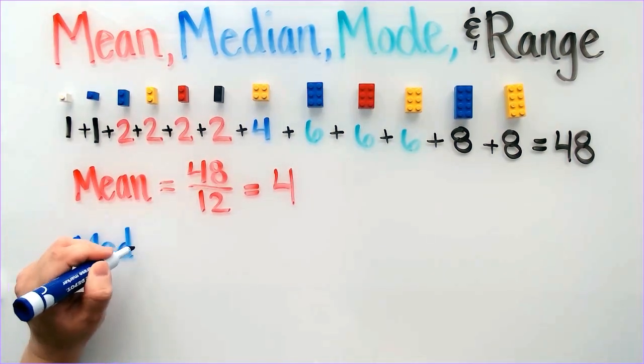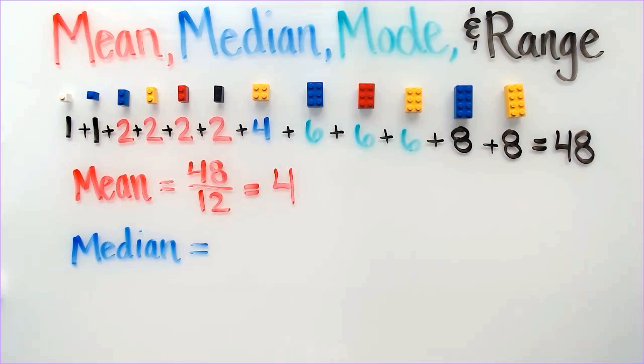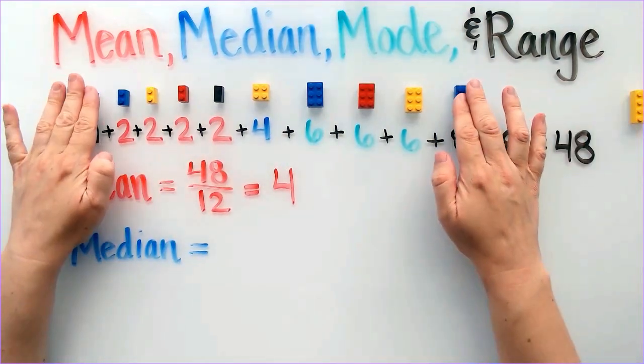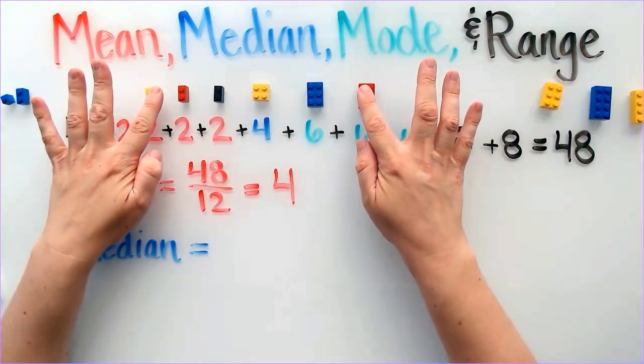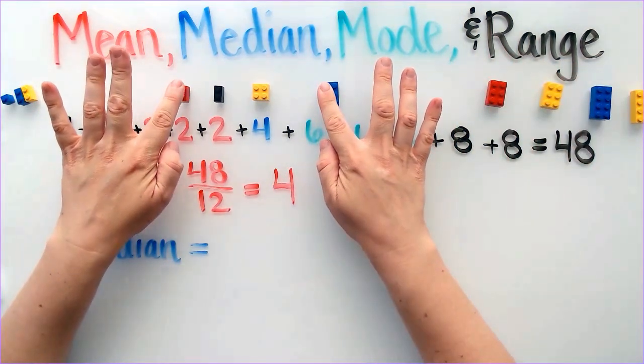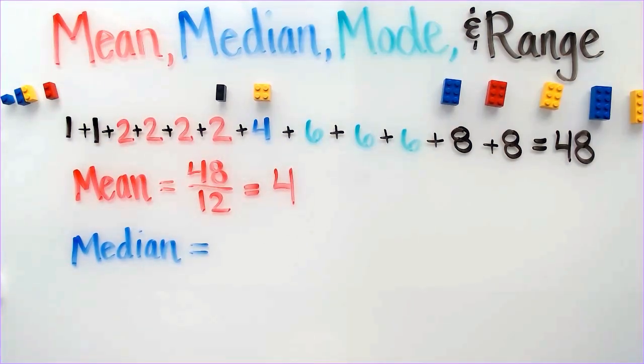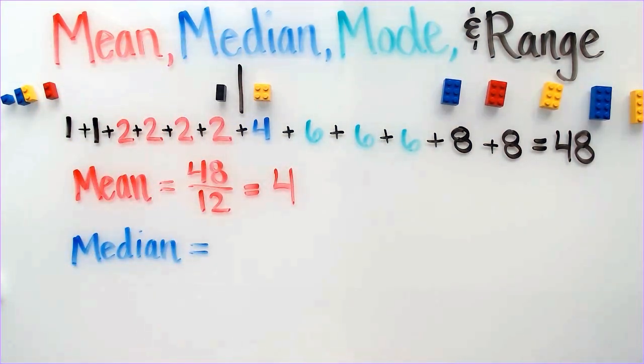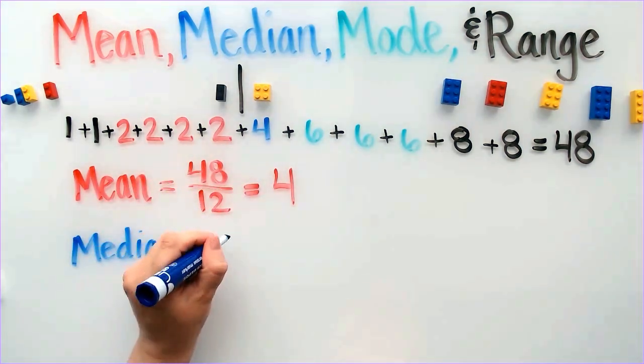The median is the middle value. Since my Legos are already ordered by least to greatest, I can remove the Legos starting from the outsides until I get to the middle. Since there are two Legos left, the middle value is between them. I have a 2 on the left and a 4 on the right. 3 is right in between these values. That means 3 is the median.